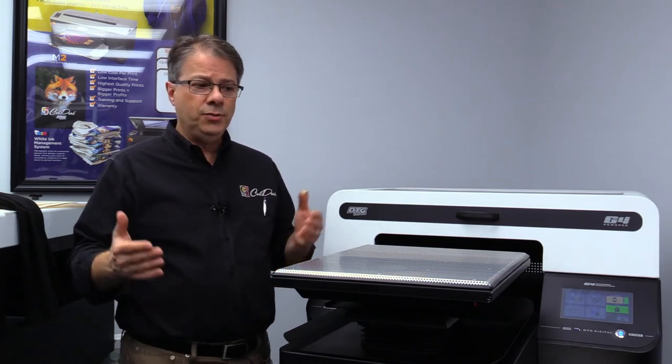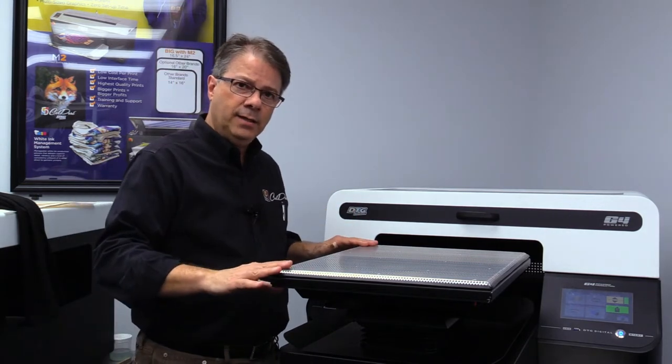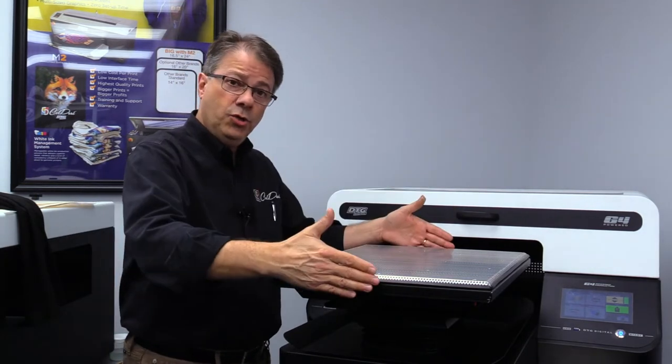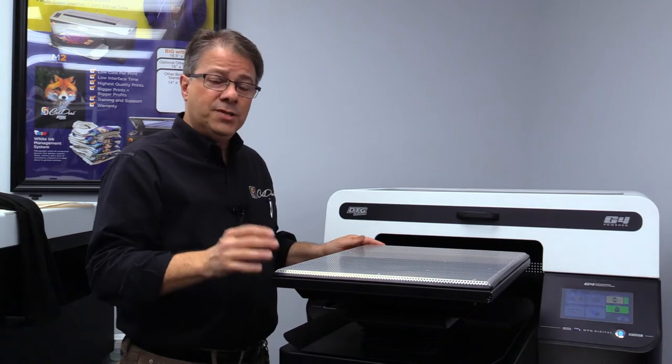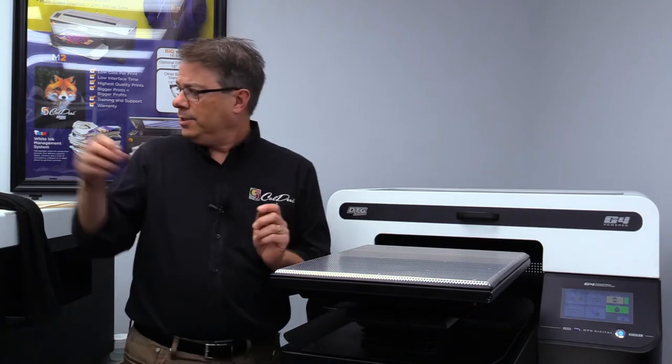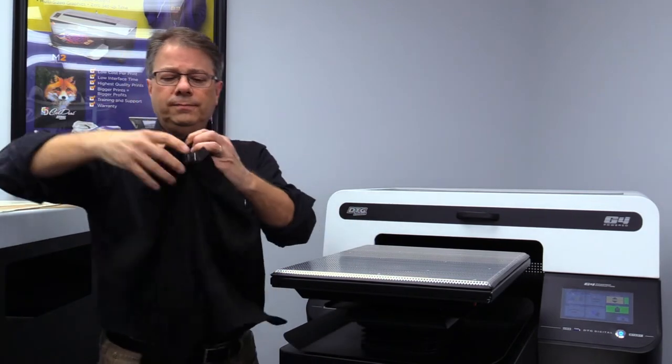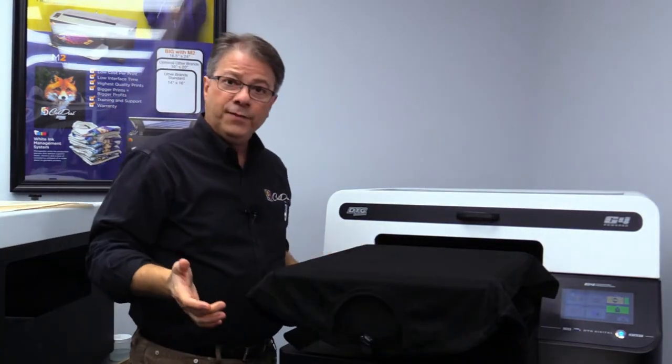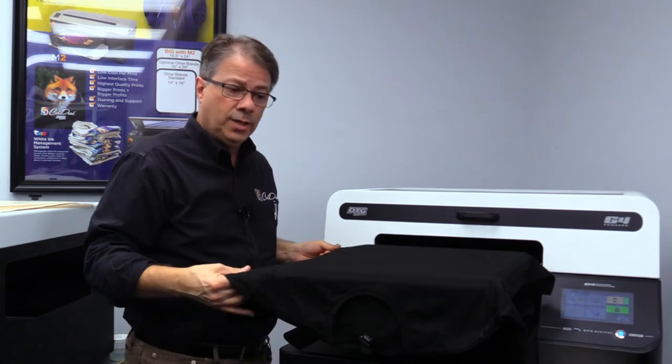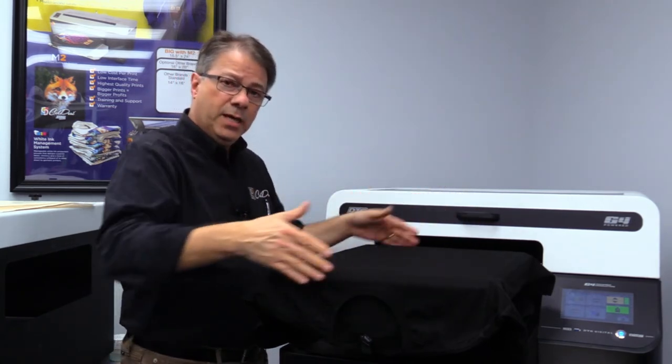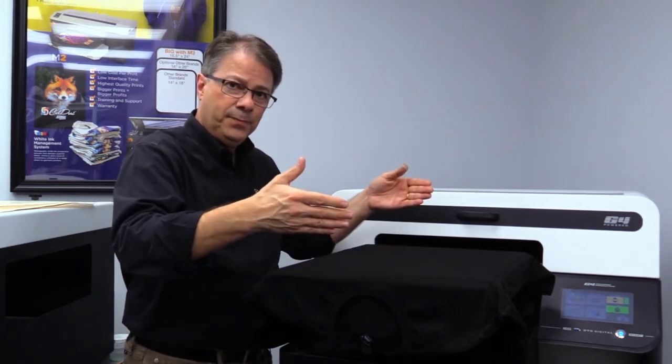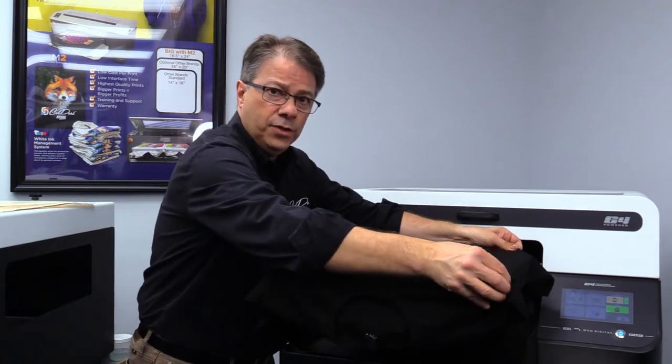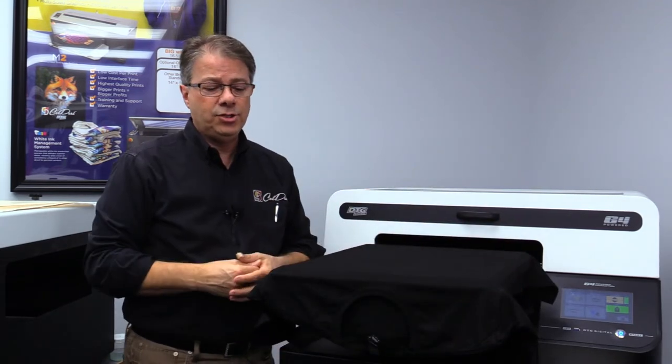This is also in contrast to the systems where they have a sticky platen. You lay the shirt on top and then you put a hoop on it to make sure it's secure because you saw how easily I adjusted the shirt. If it's off-center, I can just adjust the shirt like this. Imagine that if you have a big hoop on the top, you're going to have to lift that up and move the shirt and put it down every time to make sure it's secure.